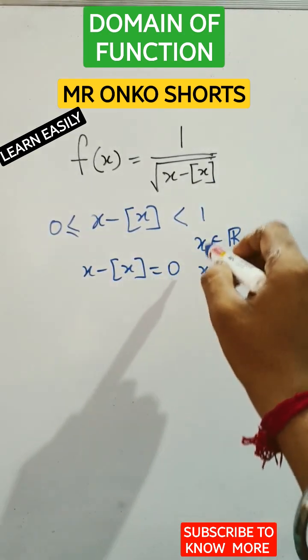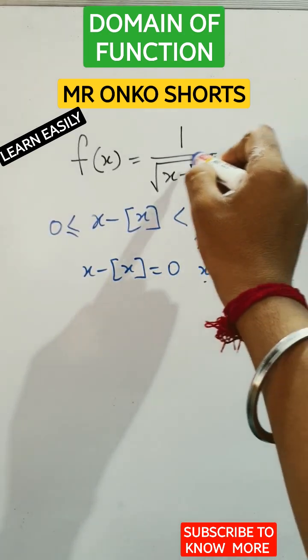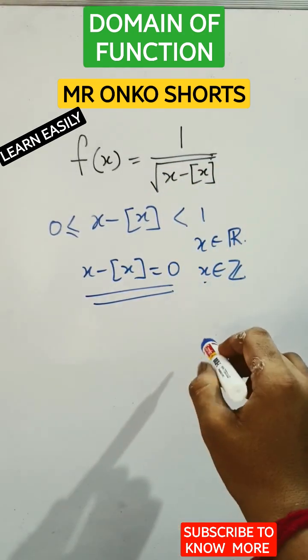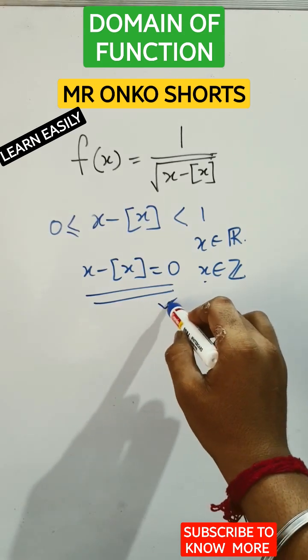Now if we think about the domain question then the numerator part under root of r can't be equal to 0. So this incident can't be happened. So we have to leave this incident.